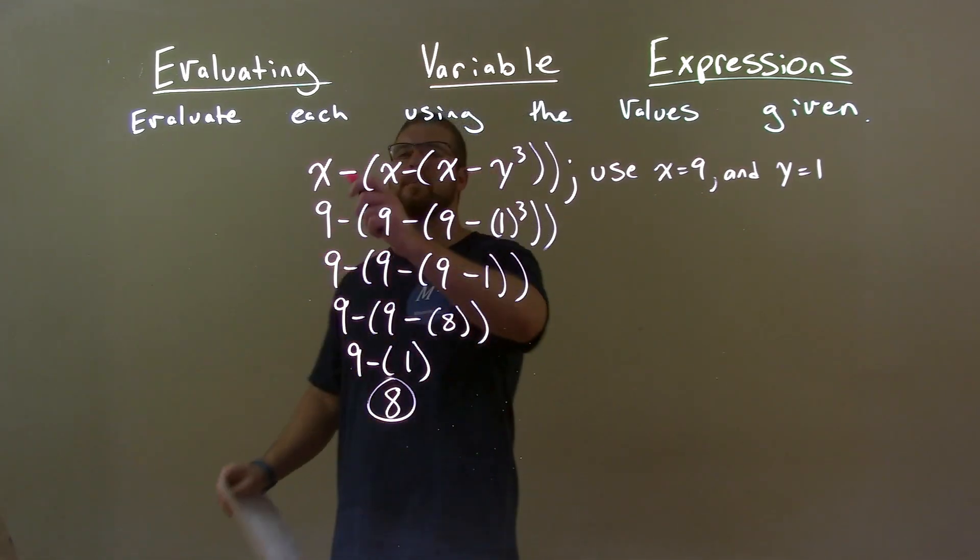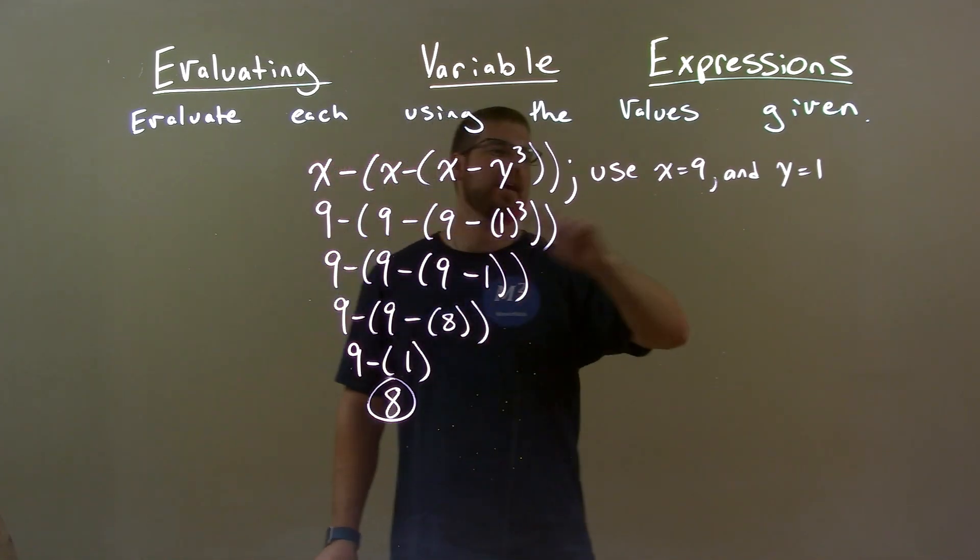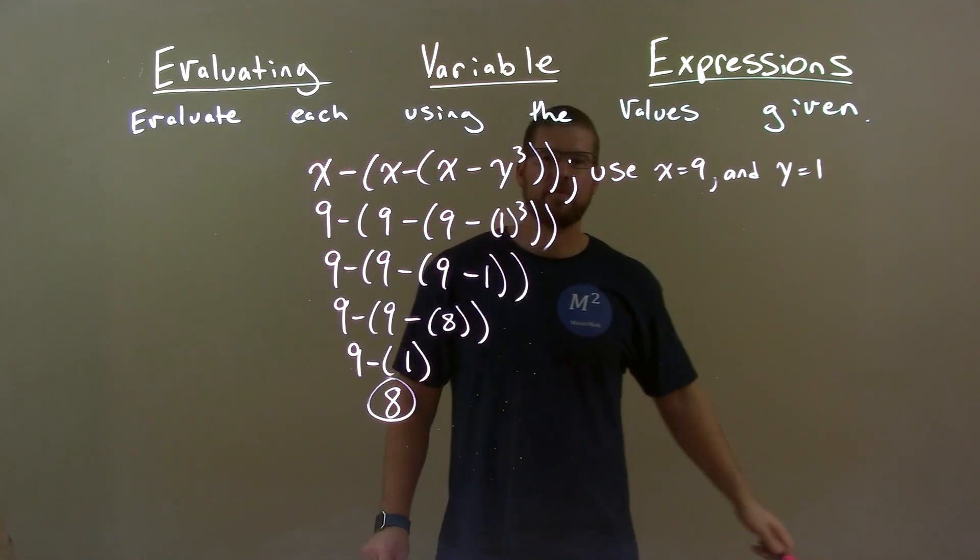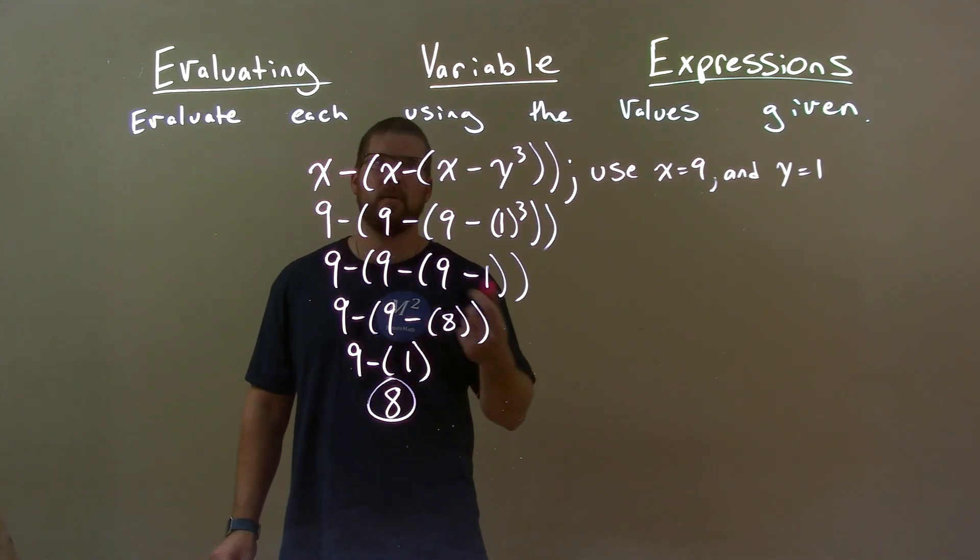Quick recap. We're given x minus x minus x minus y to the third. And we're using x to be 9, y to be 1. First step, plug these values in for their variables. Then we simplify.